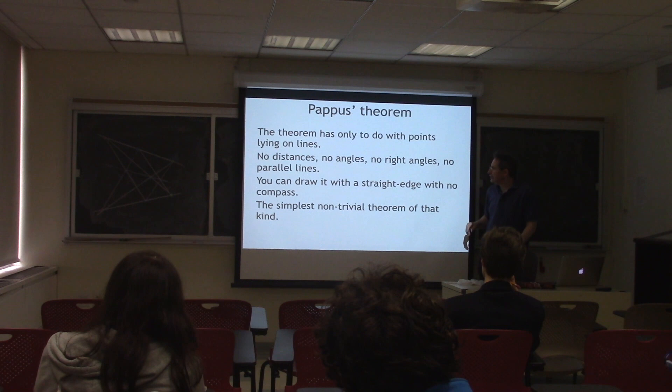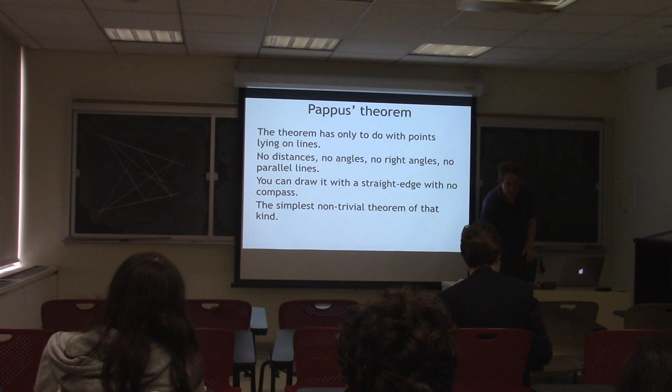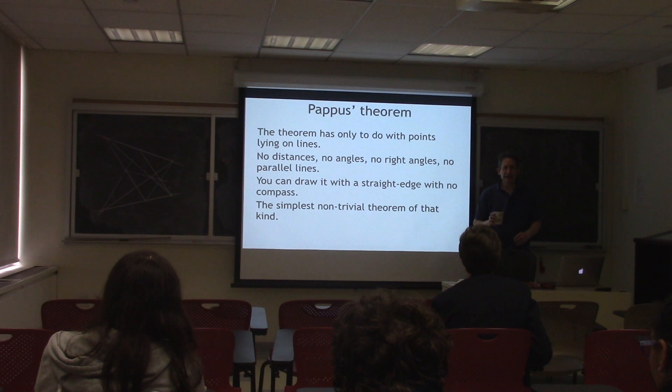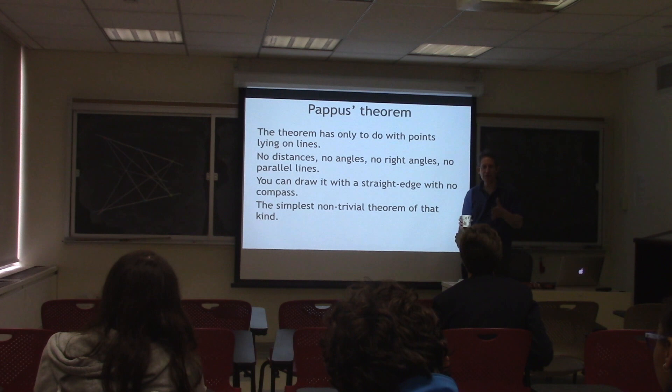This is essentially the simplest non-trivial theorem which only involves points lying on lines. Who was Pappus? Pappus of Alexandria was a mathematician who lived in the early 300s in Alexandria. He was pretty much the last great mathematician of classical antiquity. We don't otherwise know very much about him. So how do you prove Pappus' theorem?